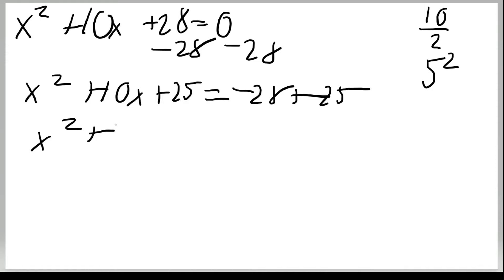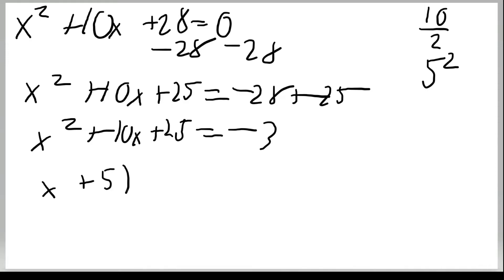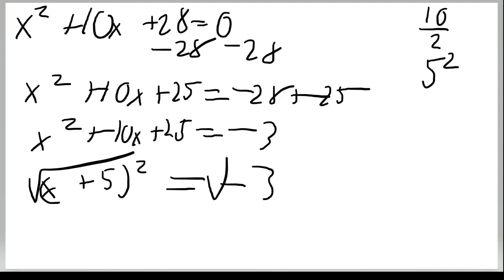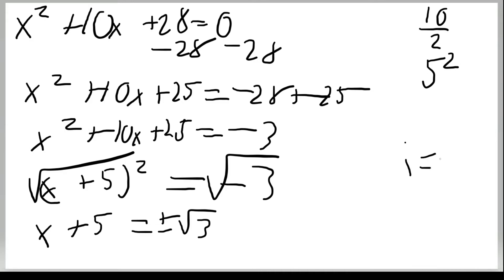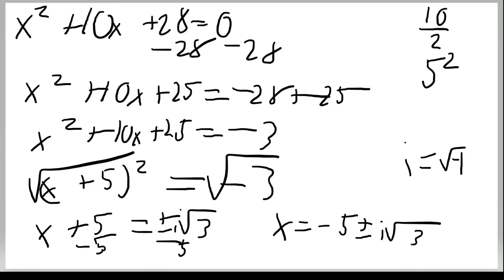That gives us x squared plus 10x plus 25 equals negative 3, which factors as (x plus 5) squared equals negative 3. Taking the square root of both sides: x plus 5 equals plus or minus the square root of negative 3. Remember, i equals the square root of negative 1, so it becomes x equals negative 5 plus or minus i times the square root of 3. That is the final answer.